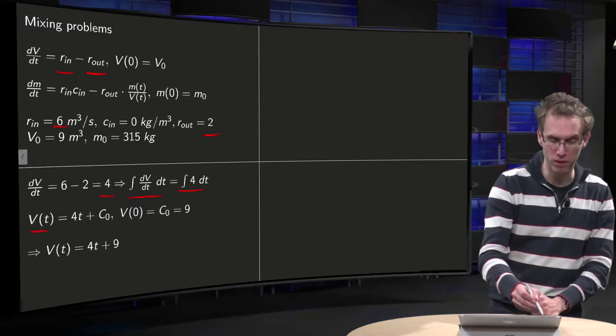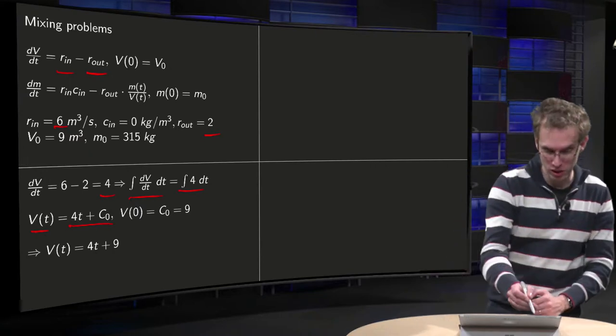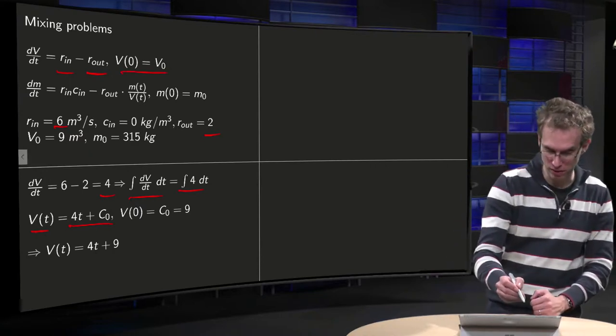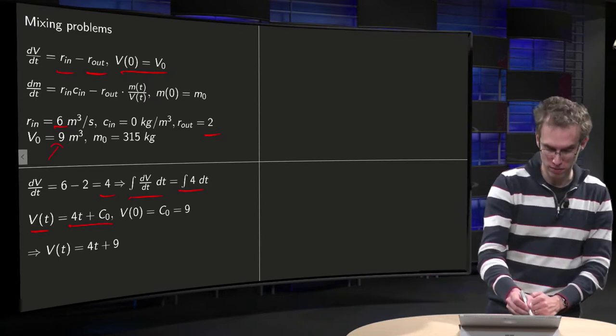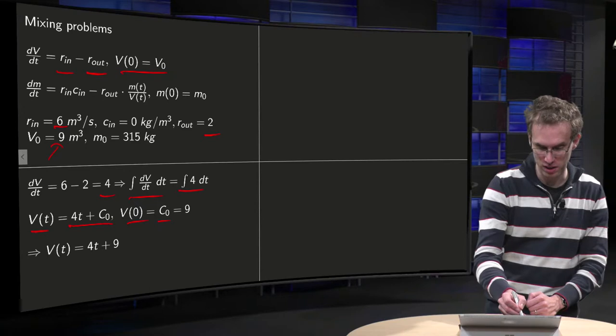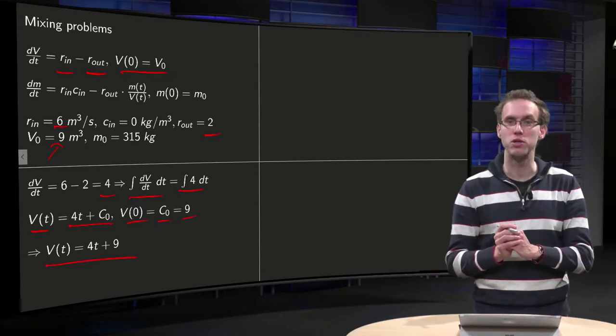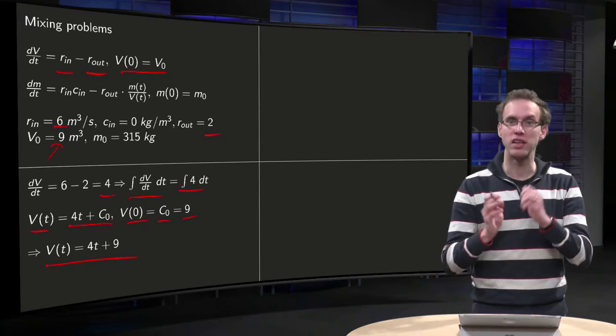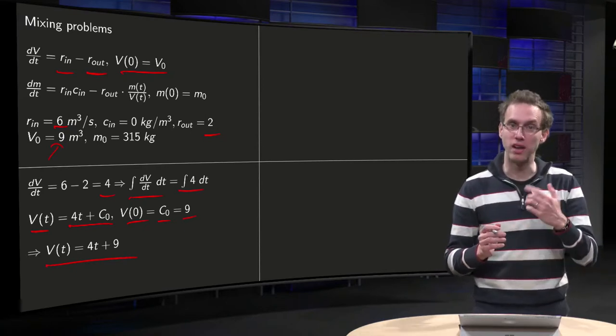So integrate on the left with respect to t, on the right with respect to t, you only need one constant. On the left you get the volume, on the right you get 4 times t plus some c₀. Here is your initial condition, V(0) equals V₀, where V₀ equals 9 cubic meters, to obtain V(0) equals c₀ equals 9. So there we have your volume, V(t) equals 4 times t plus 9. So you start at 9 cubic meters, and every second you gain 4 cubic meters.